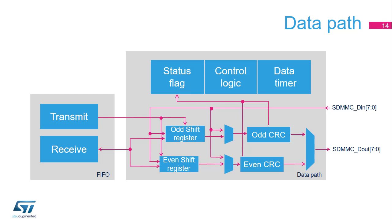In double data rate (DDR) mode, on each SDMMC CK clock cycle, the data path can send 2, 8, or 16 bits, depending on the bus width configuration. Transfer logic is clocked by the SDMMC CLK clock. It is divided into two subunits, one for data sent and one for data received, with a dedicated control bit and status flags. The data buffer is not part of the data path. Transmit and receive FIFO logic are mapped in the AHB domain. All signals from the different subunits are resynchronized.